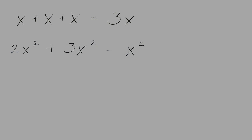When you have a variable that doesn't have a coefficient, you can always add a number 1 in front of the variable. So all you need to do is add or subtract the coefficients. 2 plus 3 is 5, subtract 1 is 4. We'll put down the 4 and keep the same variable of x and the same exponent of 2. So the answer is 4x squared.